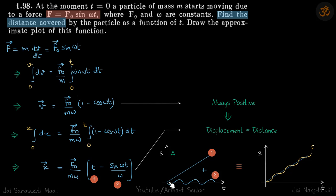We need to add this t and -sin(ωt)/ω. When we add these two, the curve will look like this. At any instant, the distance is always increasing, so the slope of this yellow curve is always positive.